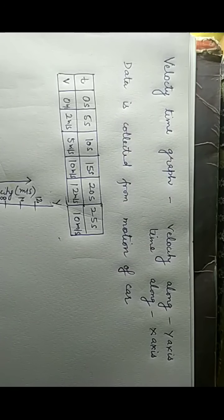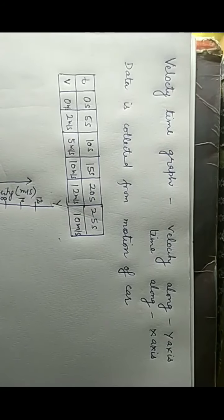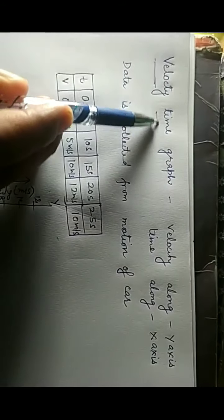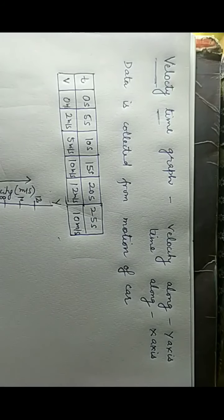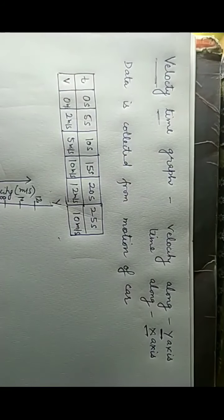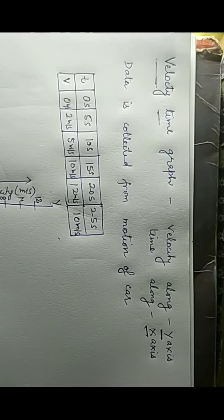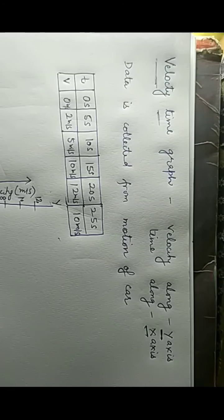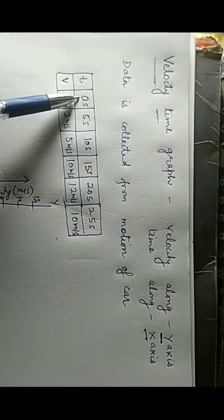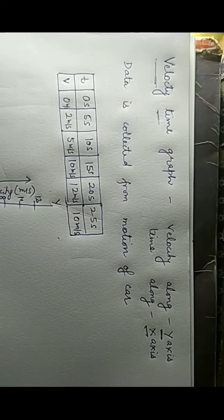In this video we will discuss about the velocity-time graph. As the name suggests, it is a graph between velocity and time, where velocity is taken along the y-axis and time is taken along the x-axis. To draw the graph, we need data collected from any physical phenomena such as motion of a car or bicycle. I have taken data from the motion of a car, with time from 0 to 25 seconds at each 5-second interval.